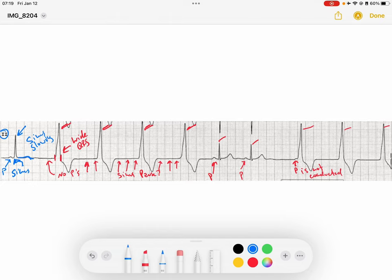And then when the sinus node picks back up, when the sinus node goes faster, it takes over the rhythm and it captures the ventricles itself with these nice narrow QRSs.